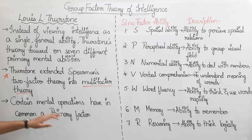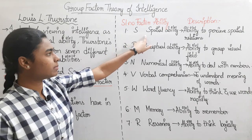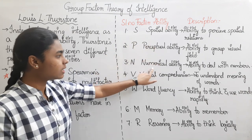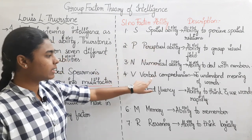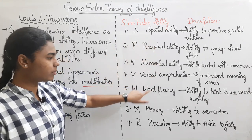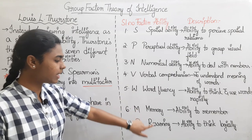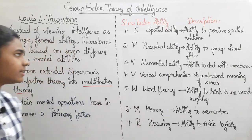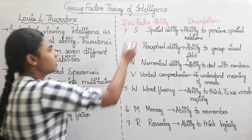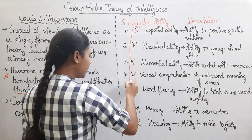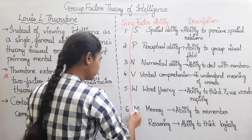The 7 primary mental abilities are: 1. Spatial ability, 2. Perceptual ability, 3. Numerical ability, 4. Verbal comprehension, 5. Word fluency, 6. Memory, and 7. Reasoning. Abbreviated as S, P, N, V, W, M, R.